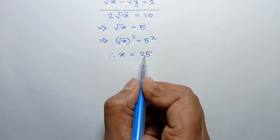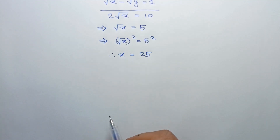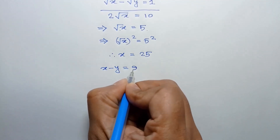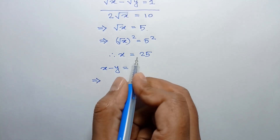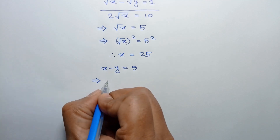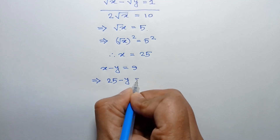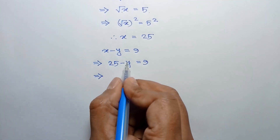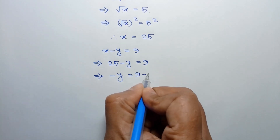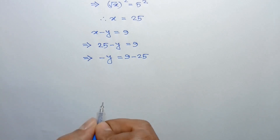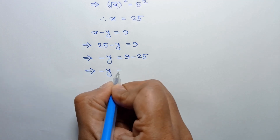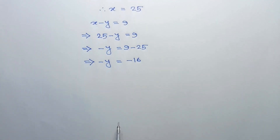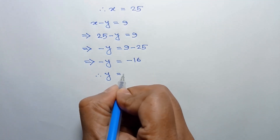Now substituting the value of x equals 25 into equation 2, we get 25 minus y equals 9. Taking 25 to the right side, negative y equals 9 minus 25, which is negative 16. Multiplying both sides by negative 1, the value of y equals 16.